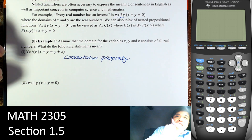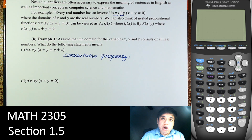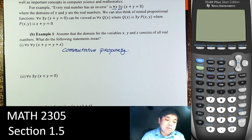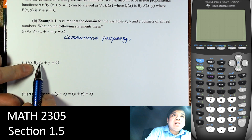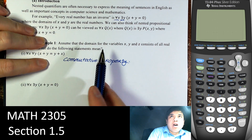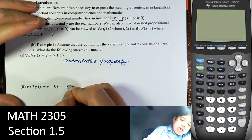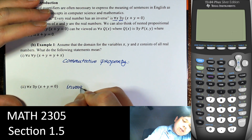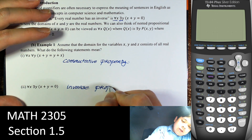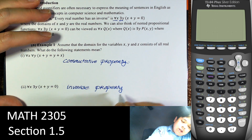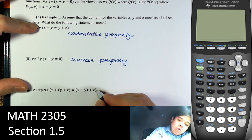x plus y is equal to y plus x, meaning we can interchange the position in a sum. For every x there is a y such that x plus y equals 0 — we talked about this already. That's called the inverse property. And for every x, every y, every z — this is the associative property.